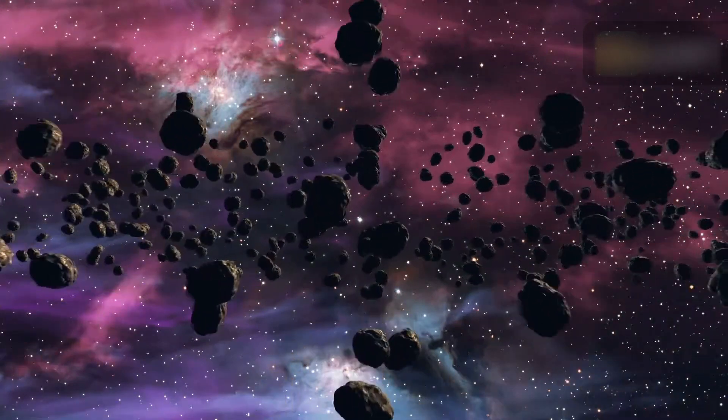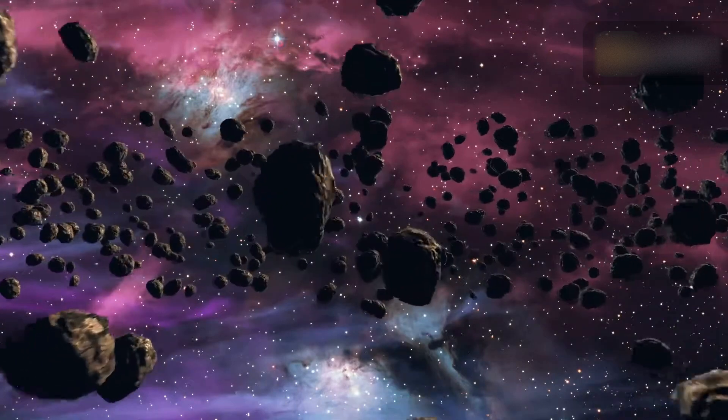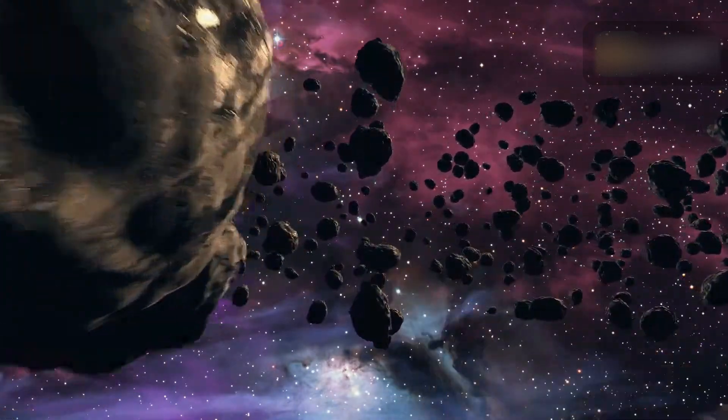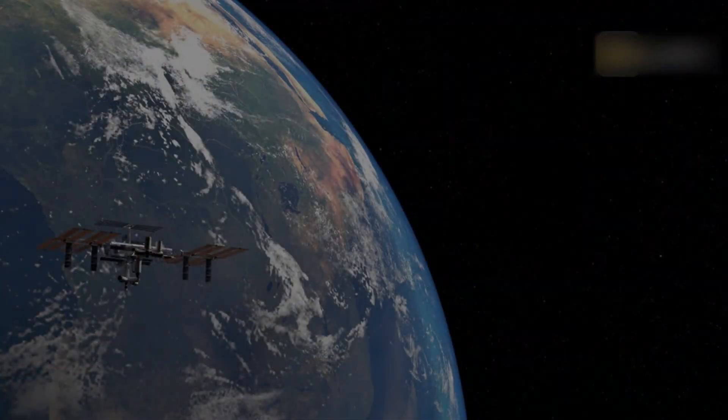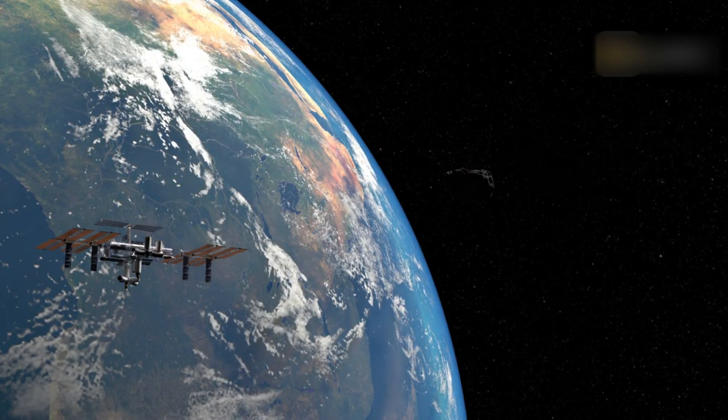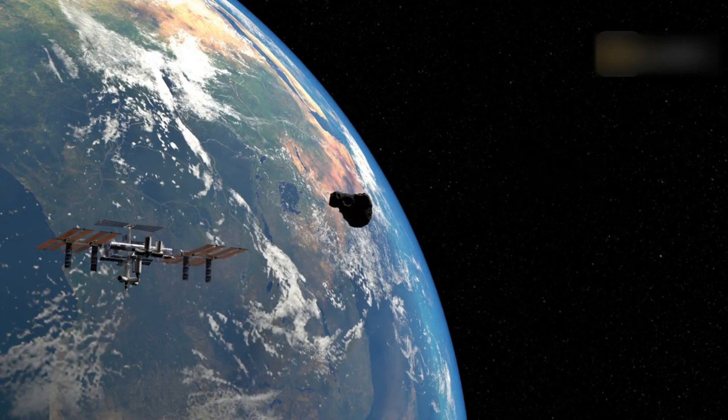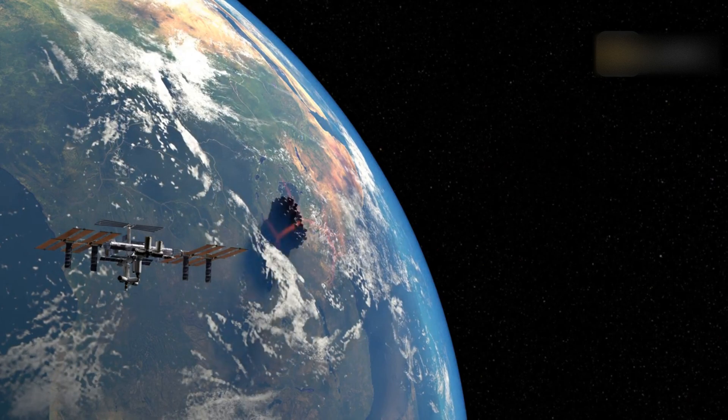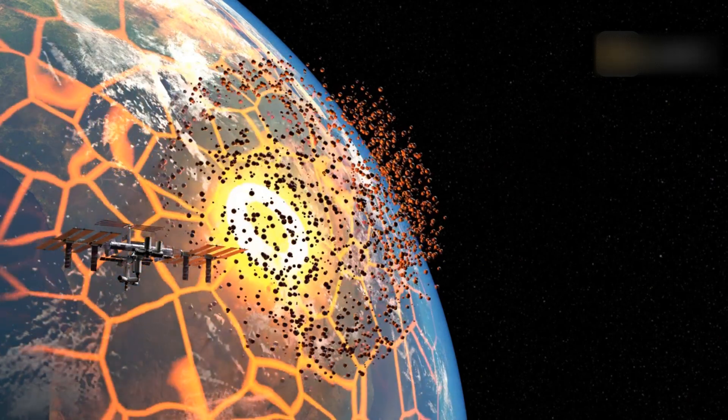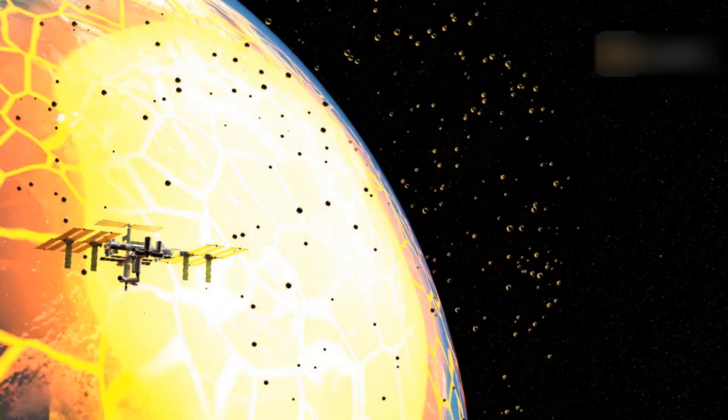The only way to eliminate the threat of an asteroid impact on Earth is to detect it and change its course. Many organizations, especially NASA, regularly scan the sky to identify celestial objects that could impact Earth. These organizations are actively exploring the best ways to protect Earth from celestial objects that could impact Earth.